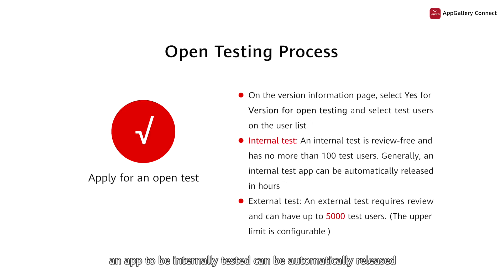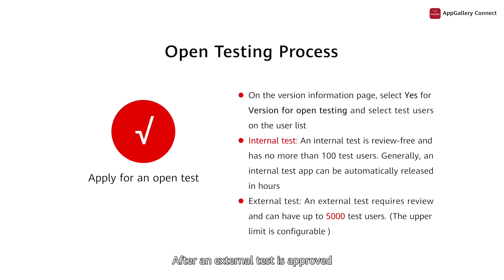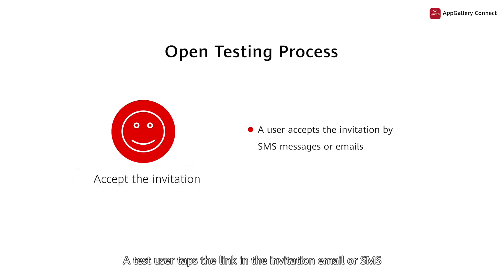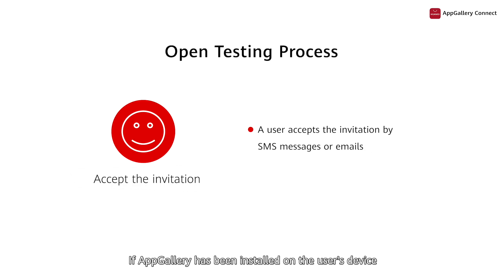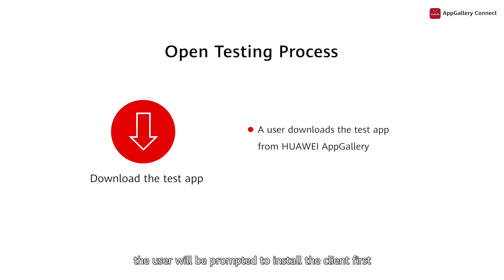Generally, an app to be internally tested can be automatically released a few hours after application. If you don't select that internal test option, the test will be an external one, so manual review is required and up to 5,000 users can be invited. After an external test is approved or an internally tested app is released, the invitation will be sent to test users via email or SMS. Step 3: a test user taps the link in the invitation email or SMS to accept the invitation. If AppGallery has been installed on the user's device, it will automatically launch and the details page of the app to be tested will be displayed. If AppGallery has not been installed, the user will be prompted to install the client first and download the app to be tested.